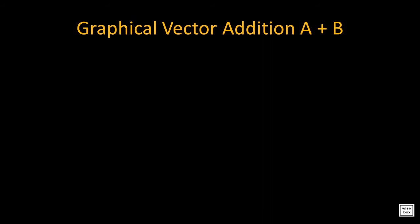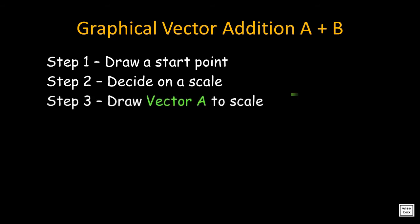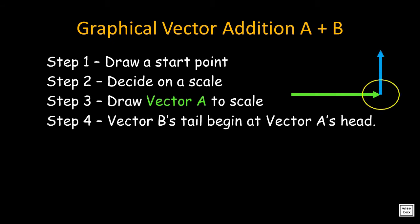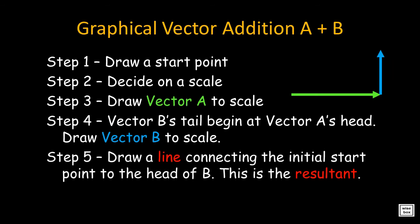When using the graphical method, you may follow these steps. First, draw a start point. Next, decide on a scale — the scale is the length of your arrow in proportion to the actual magnitude. Then draw vector A to scale. Remember, vector B's tail begins at vector A's head. Make sure to draw vector B to scale. Then draw a line connecting the initial start point to the head of B. This is called the resultant.